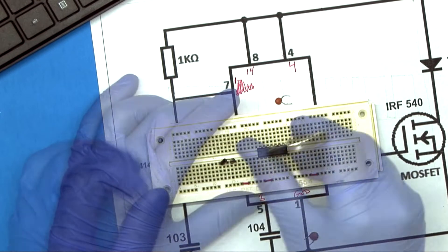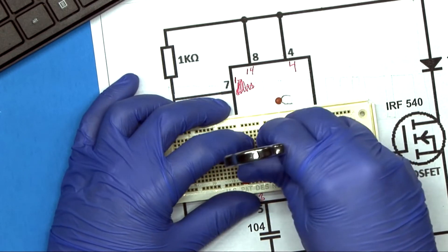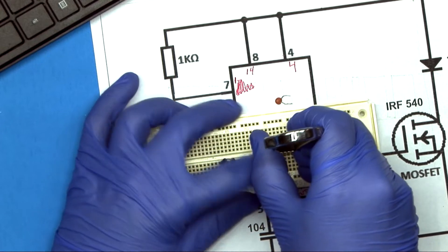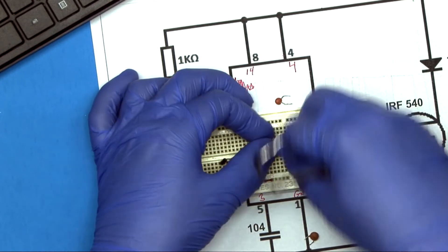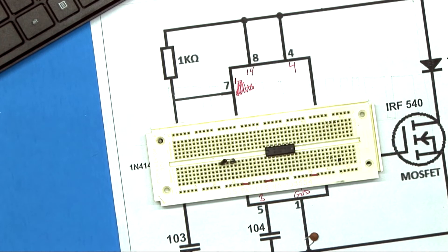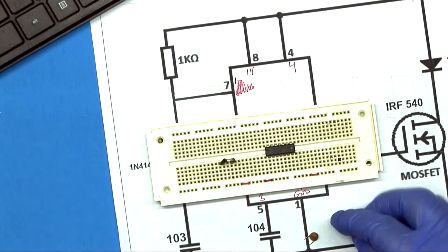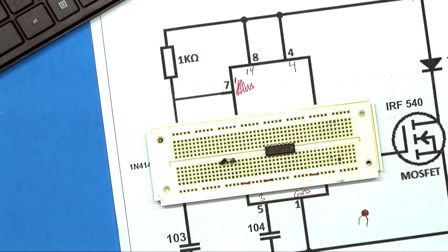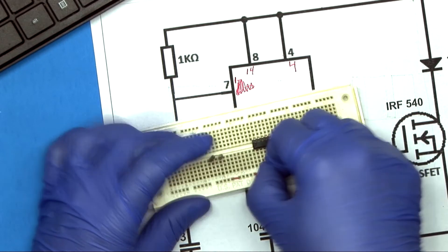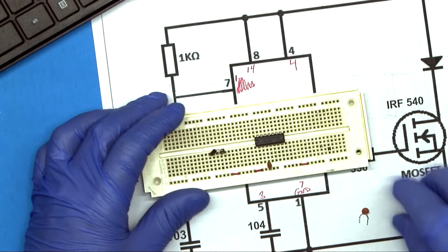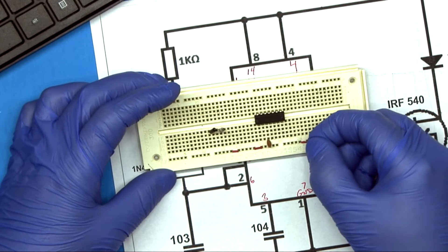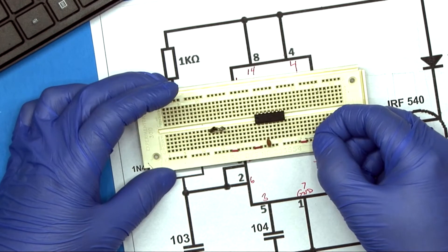And I got a couple caps. This is 104, which is 0.01 microfarad. So we're going to take 3. Let's move this IC down a little bit so we have easier access to ground.